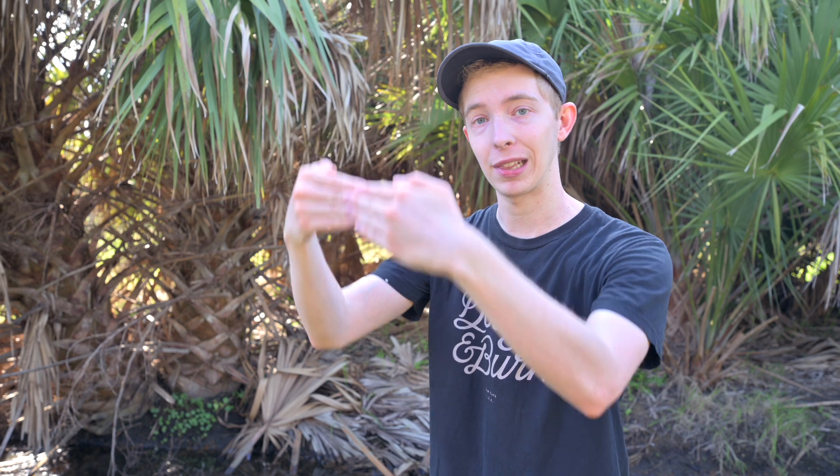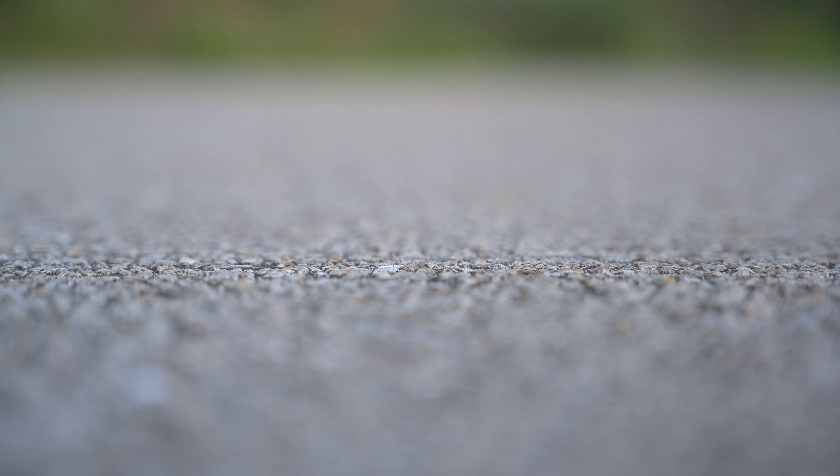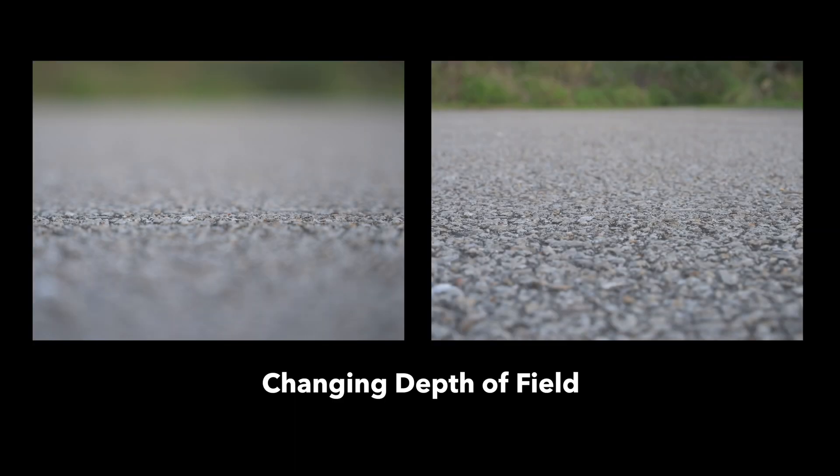Depth of field is not a point — depth of field is a plane. I like to think of it as a window positioned in front of your lens, and anything that the window passes through in your photo is going to be in focus. You can move this window forward and backward, which is called focusing, so that it intersects with your subject. You can also change the thickness of the glass in this window example, and that's called changing your depth of field.